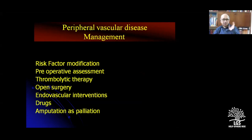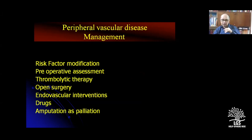Advanced age should not be the sole basis for exclusion of an otherwise suitable candidate for elective aortic aneurysm resection. Age alone is not a detrimental factor, but other factors add summatively to the risk. Don't jump to surgery when there is no ulcer — only features of chronic ischemia. First do risk factor modification: controlled diet, weight, cholesterol, hypertension. Do preoperative assessment as cardiologists do. Open surgery or endovascular interventions can be planned; till that time, drugs can be given. Amputation is only a palliation.